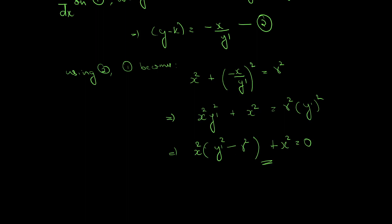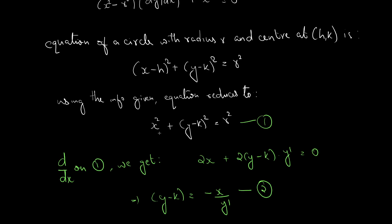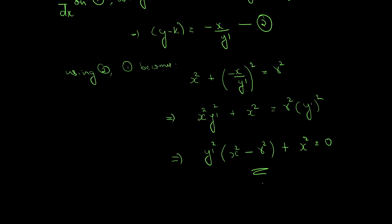Sorry, there was a typo in the previous step. The correct final result is: x squared minus R squared into dy by dx the whole square plus x squared equal to 0. We brought that term to this side and took dy by dx the whole square common. This is the required solution.